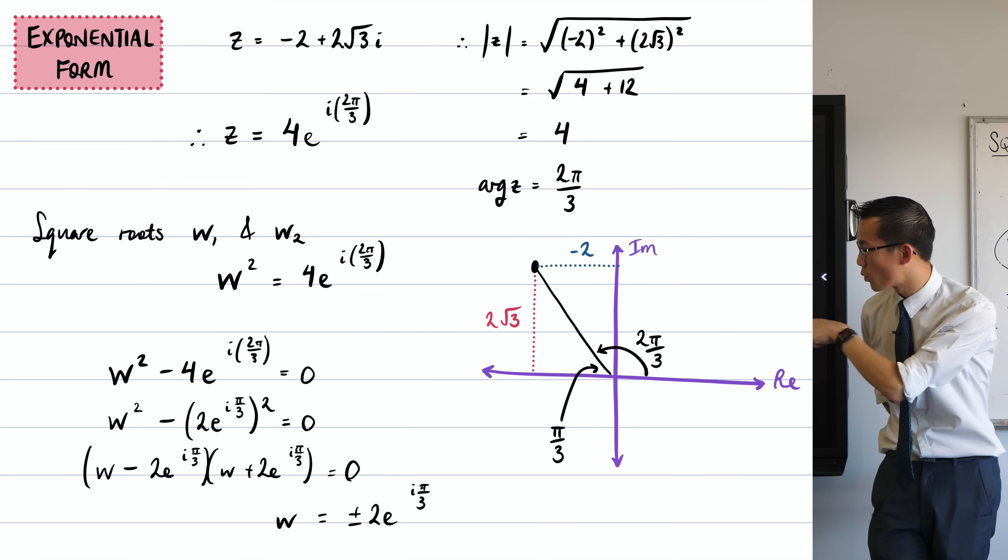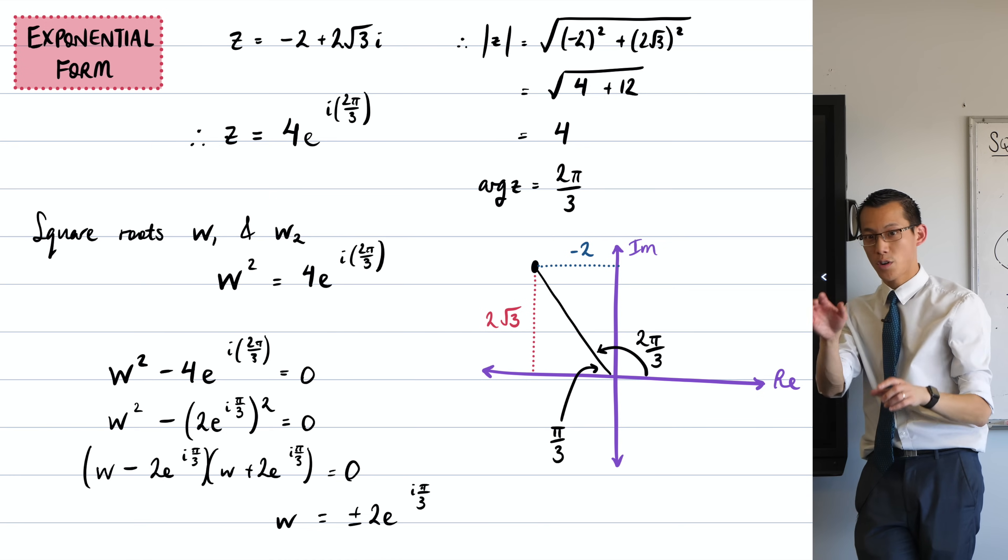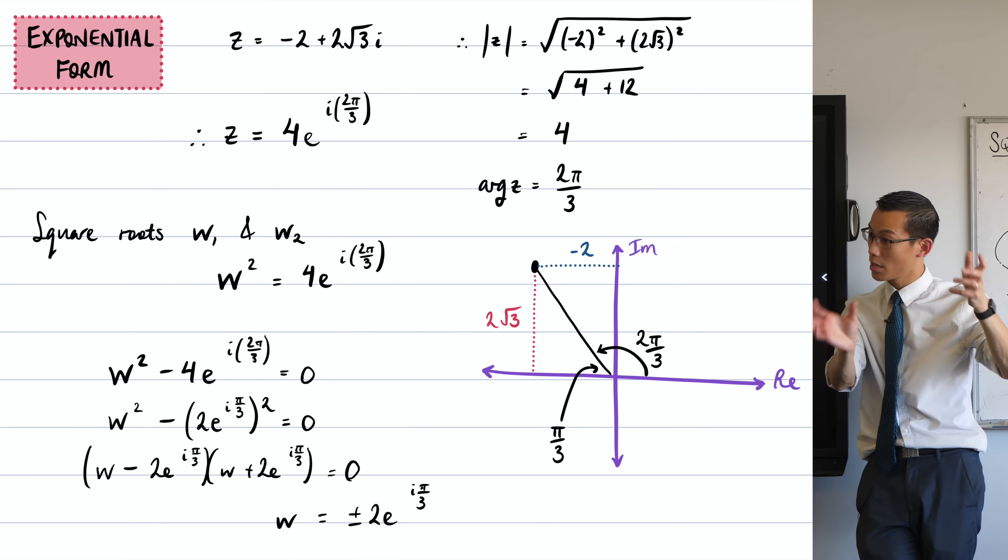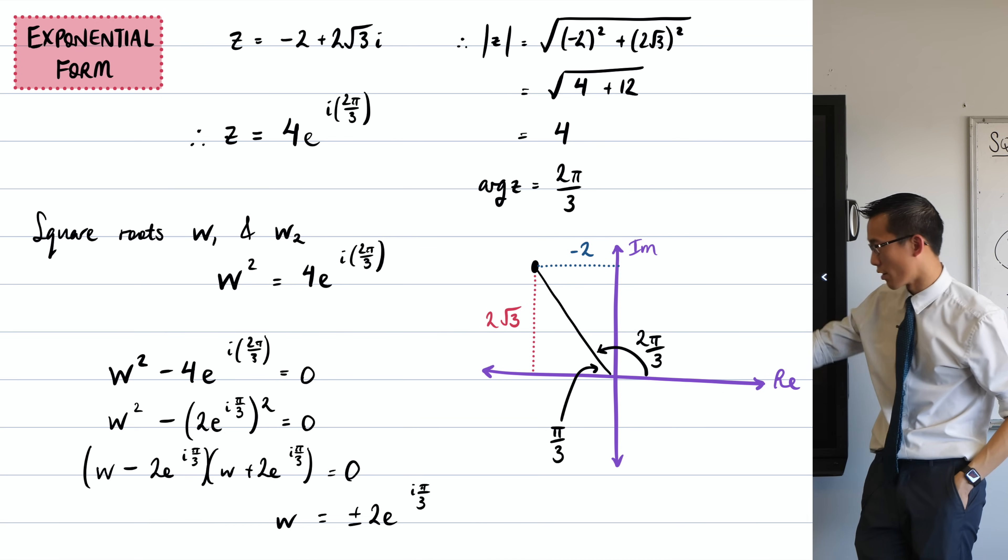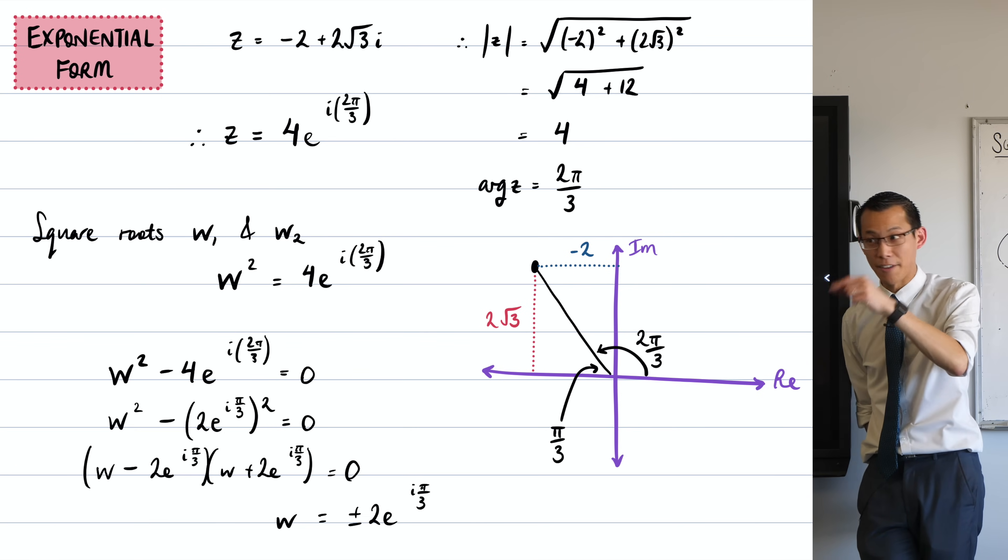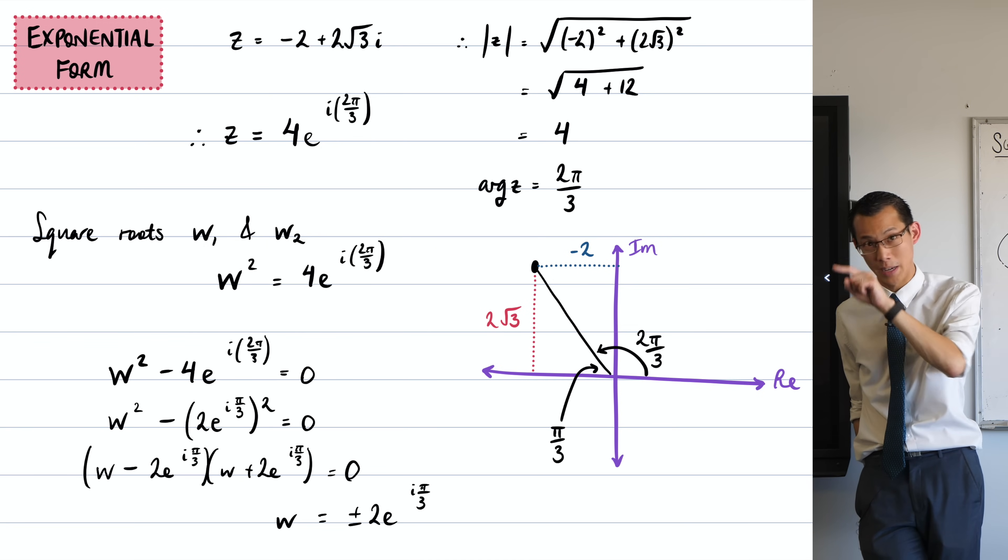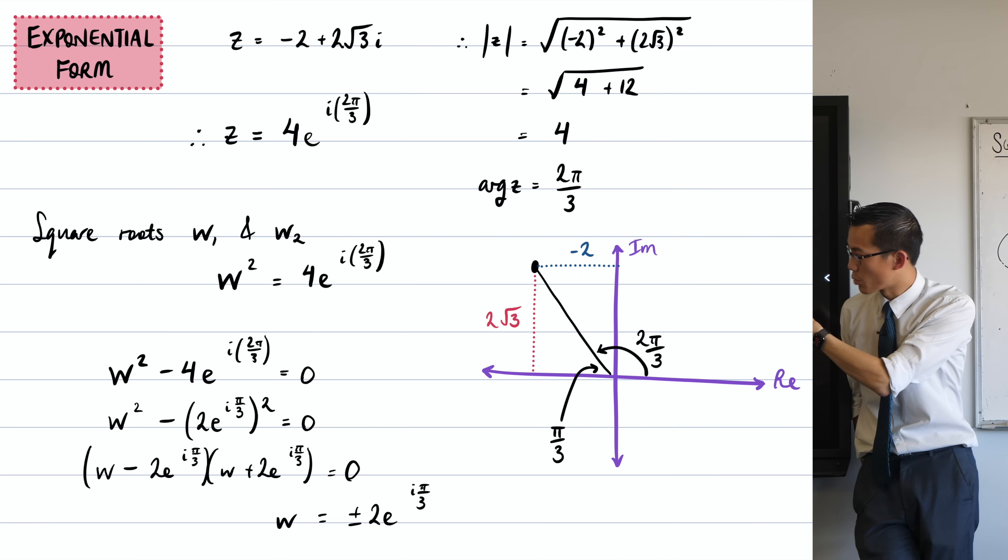Do you see my line there? W squared equals 4E to the etc., right? So then you've got, it's something squared, take away something else squared. You just have to rewrite it in a form, which is what I've done on this third last line to show what's being squared. To get 4, you square 2. With the indices, to get to 2 pi on 3, because it's being doubled, you halve it, right? So that's why it's pi on 3 on the inside and you multiply by 2.